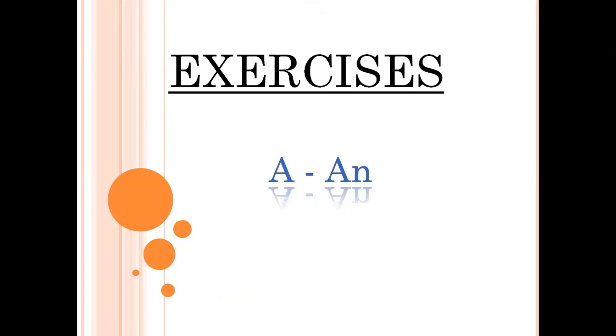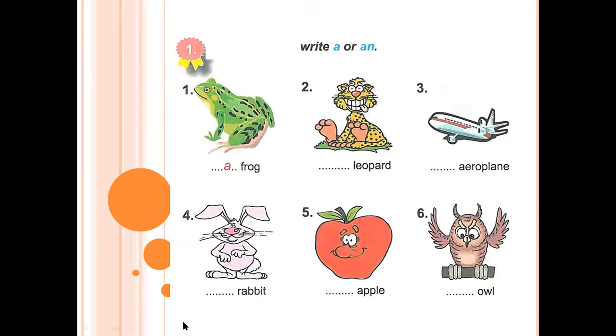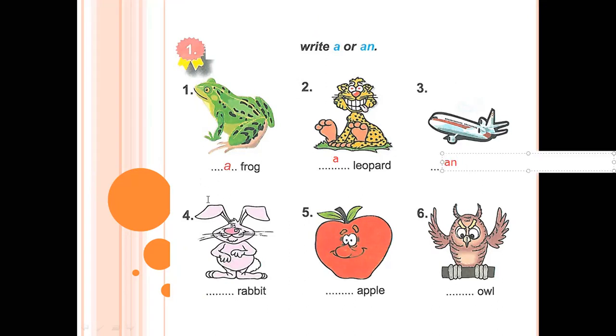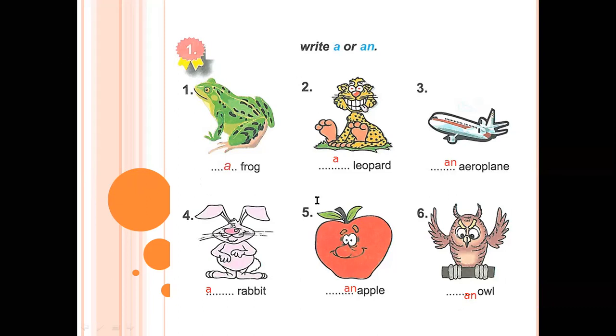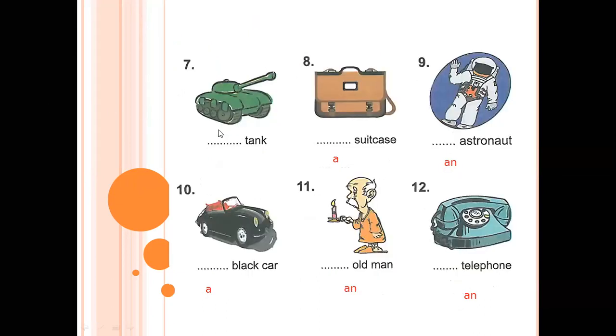Okay, now let's do an exercise of A and An. A frog. A leopard. An aeroplane. A rabbit or an rabbit? A rabbit. An apple. An owl. A tank. A suitcase. An astronaut. A black car. An old man. A telephone.